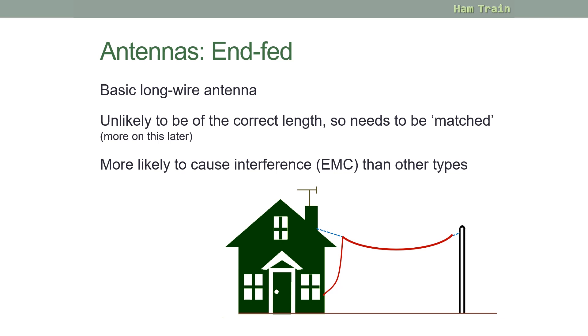And next is the end fed antenna. This is basically a long piece of wire. It's unlikely to be the right length for the frequency that you'd like to operate on, so you need to match it to your transmitter. Again, more on this later. The long wires generally tend to cause more interference than any other type of antenna, and we'll talk about that in a later module when we discuss EMC. So that's the basic end fed long wire antenna.